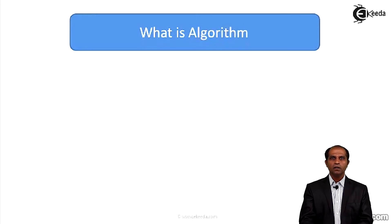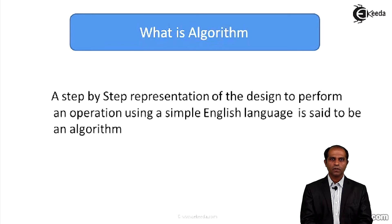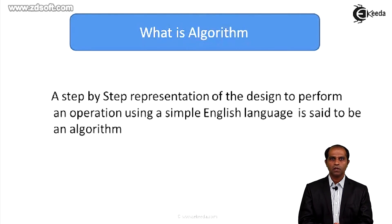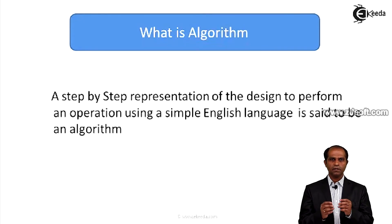What exactly is an algorithm? An algorithm is a step-by-step representation of a design to perform an operation using simple English language. An algorithm is independent of programming languages. The entire designing has to be said in a step-by-step using simple and conversational English language.